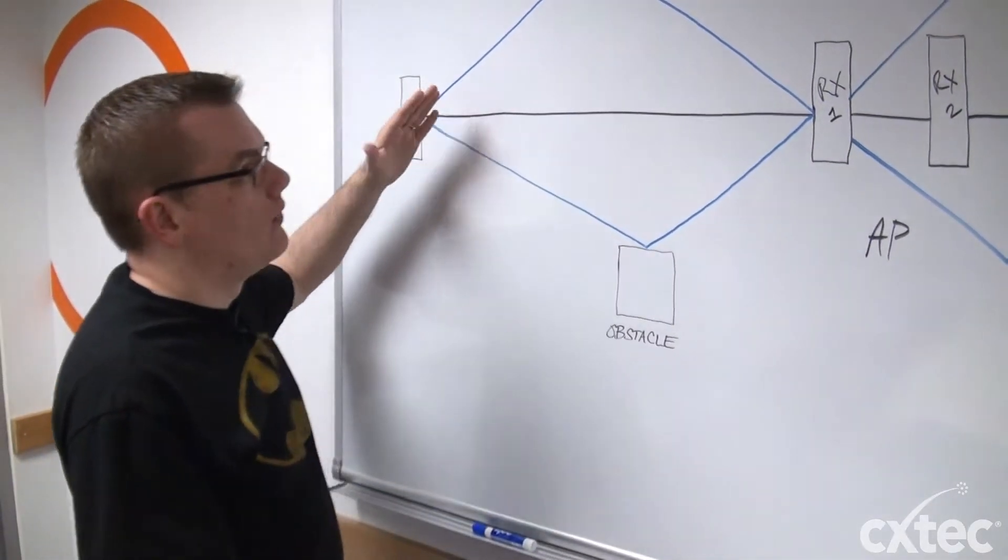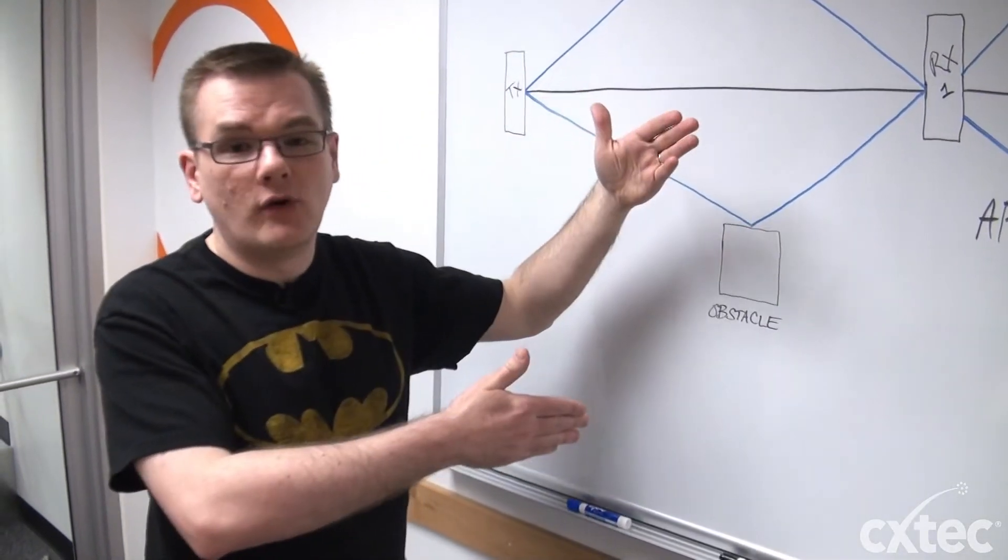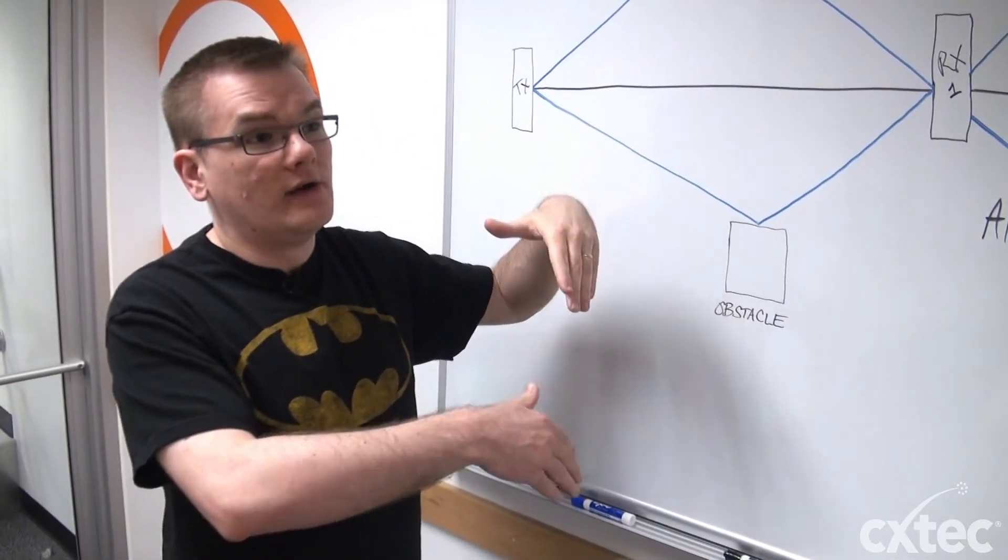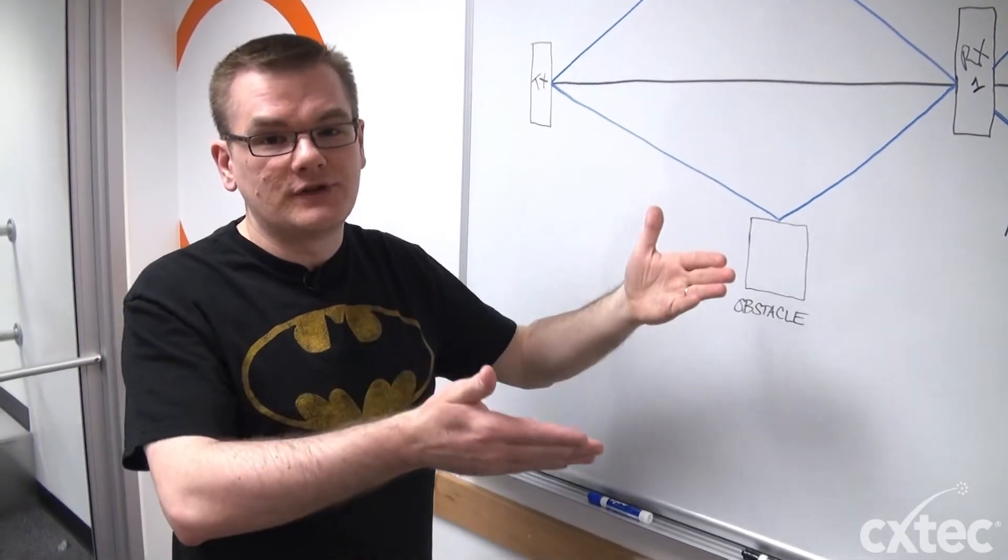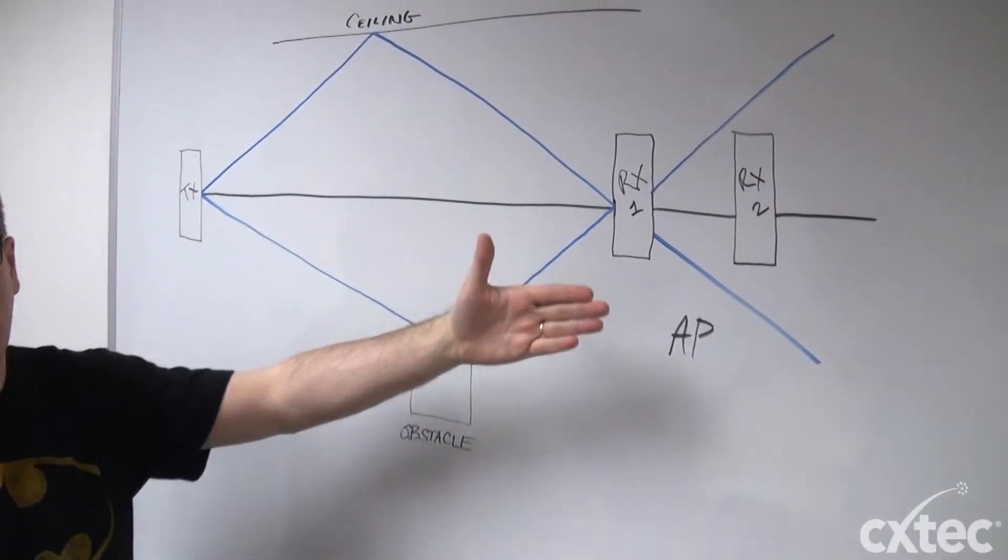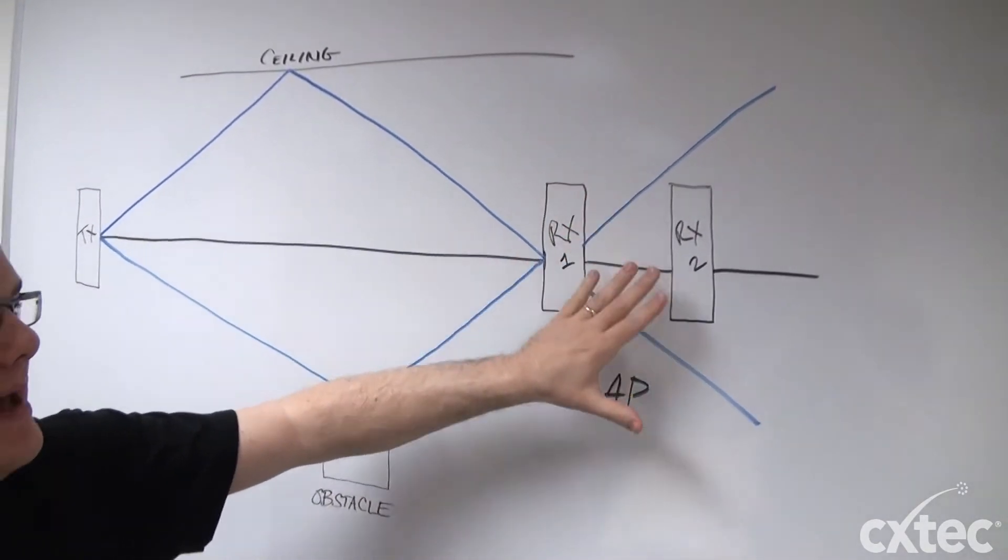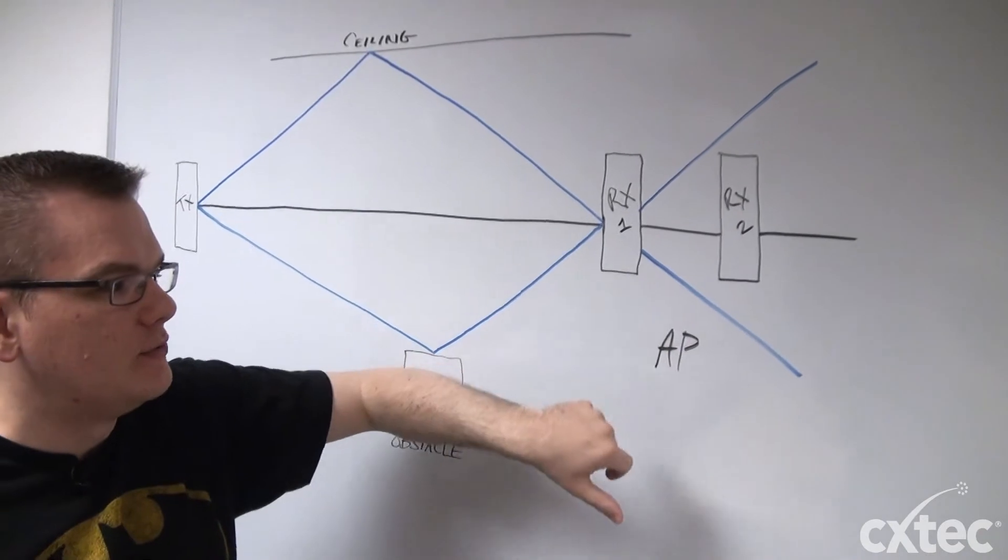There could be another scenario where, because of maybe the way the room is laid out, because of something or an event going on in the room, or maybe in a warehouse where stock may change or stock levels rise, receiver two would be used maybe later in the week or another time. Either way, it's going to pick one of these two antennas to utilize.